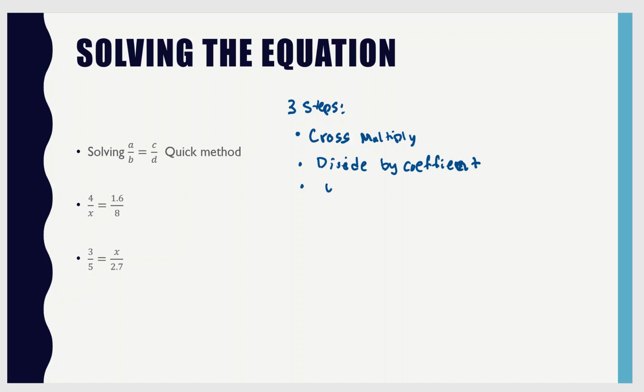The third step is to use your calculator. By cross multiplying, I mean move the d on this side and the b on that side — whatever the two denominators, the bottoms of the fractions are, you move them to the other side. Then one of those sides is going to have a number times the variable, and you're going to divide by the coefficient. The coefficient is the number times the variable. And then finally, you use your calculator to get the answer.